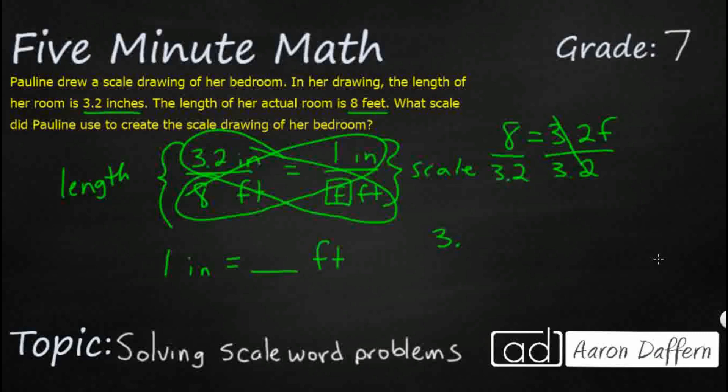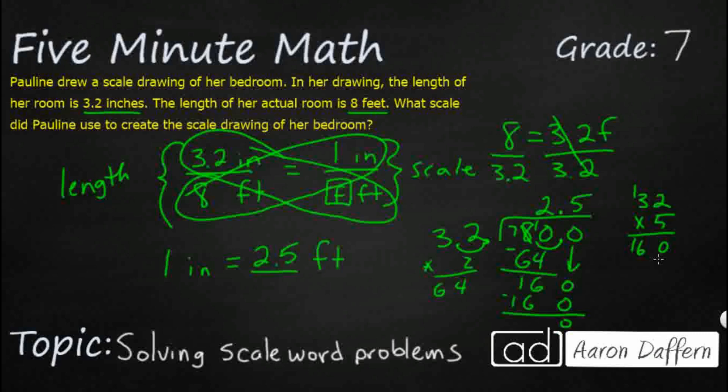So let's divide 3.2 into eight. So we need to go ahead and get rid of that decimal here. And so let's make it 32 into 80. That's going to be a little bit easier for us. So 32 goes into 80 twice, not quite three times. So that is going to be 64. Let's just double check. There we go. 64. And if we complete it, we see it's 2.5. So our scale is one inch equals 2.5 feet.